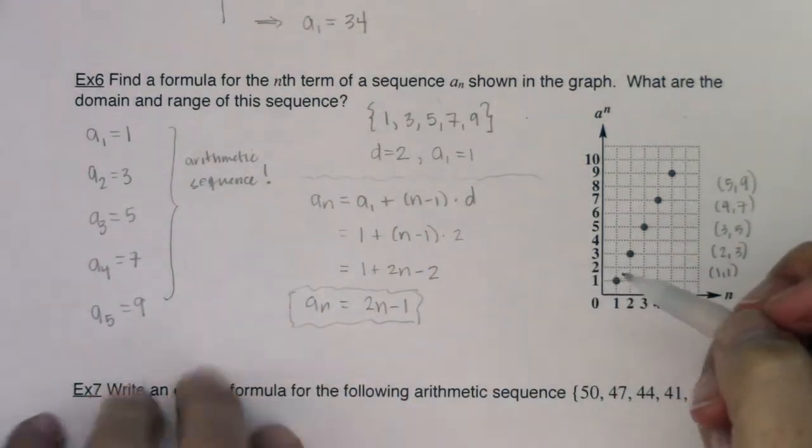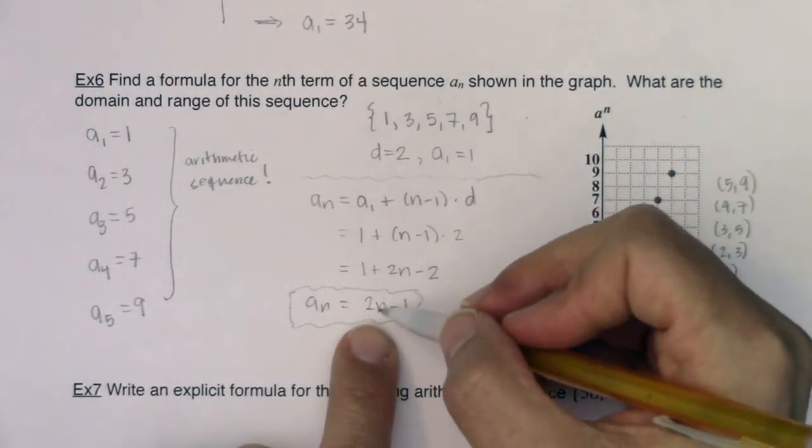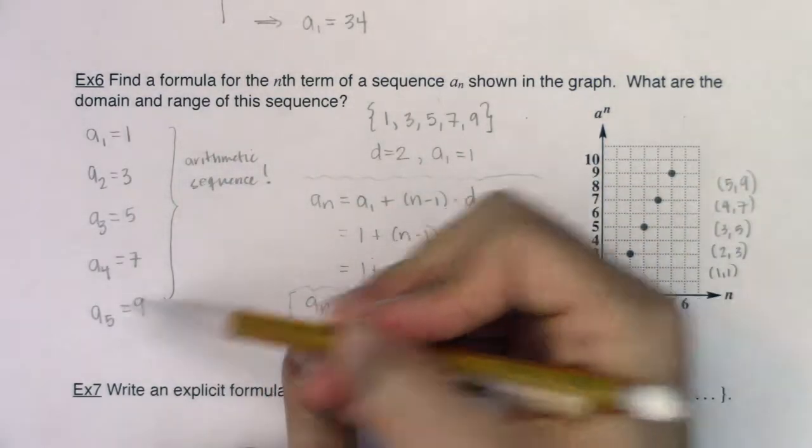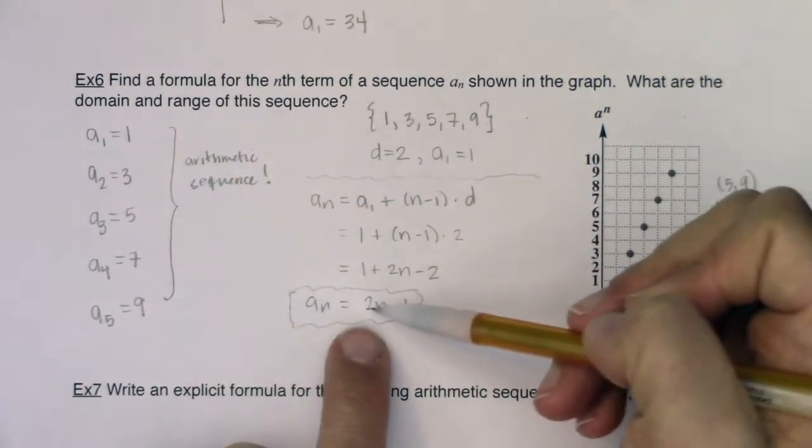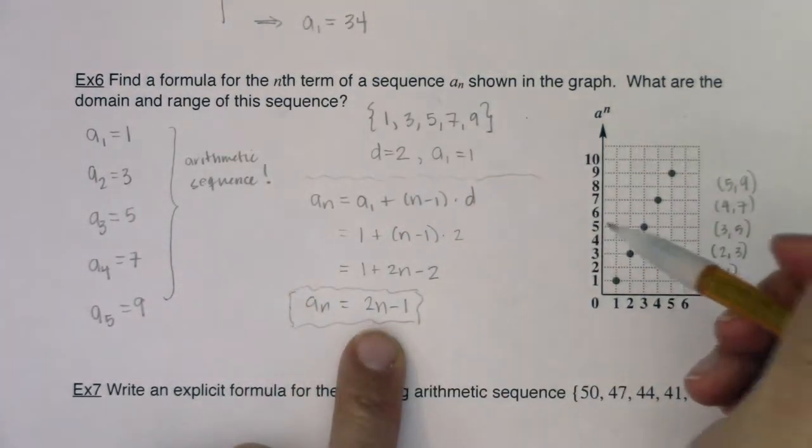Let's check and make sure it's working. If I were to plug in a sub 1, if n was 1, 2 times 1 is 2, 2 minus 1 is 1. Great. Let's try a sub 5. If it was a sub 5, 2 times 5 is 10, 10 minus 1 is 9. Great, that's working.